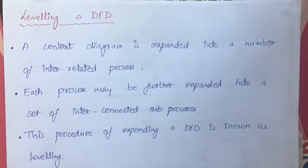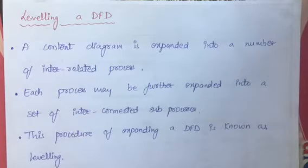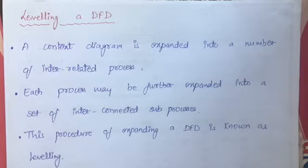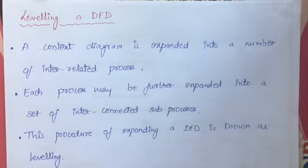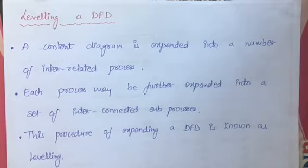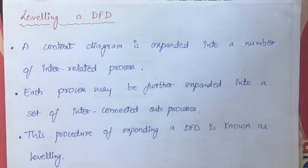So what is Leveling? We use the Context Diagram which gives our initial abstract view of the system. Then we go into details. Now we divide the process into subprocess — we expand each process. In that process, there are many processes. So what do we call this procedure? Leveling.